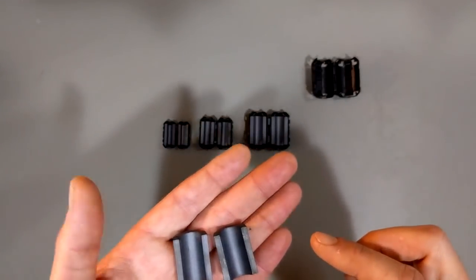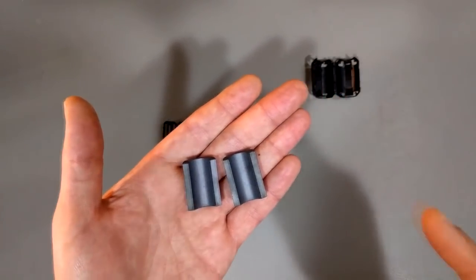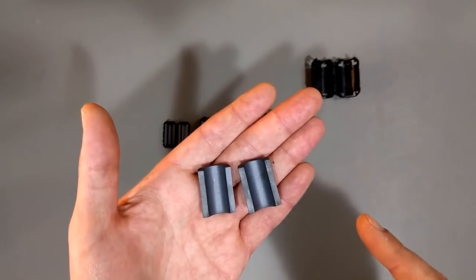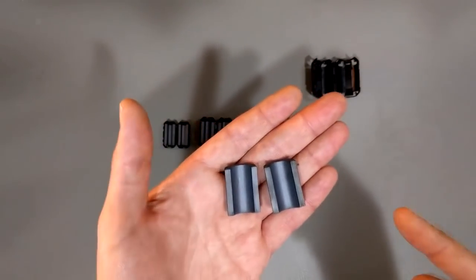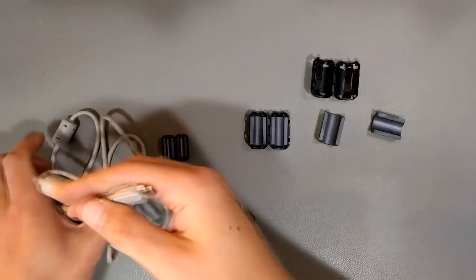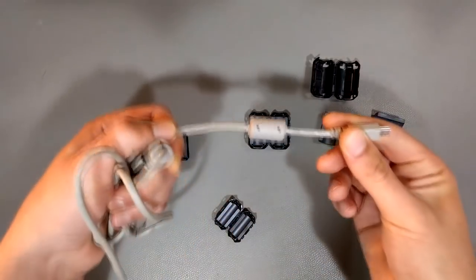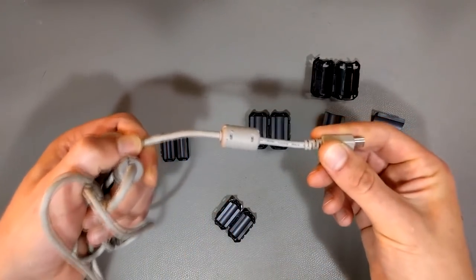Now ferrite is a rather interesting material because it is generally non-conductive but it is easily magnetized. And the way these things actually work is you have your cable and your cable can actually act as an antenna.